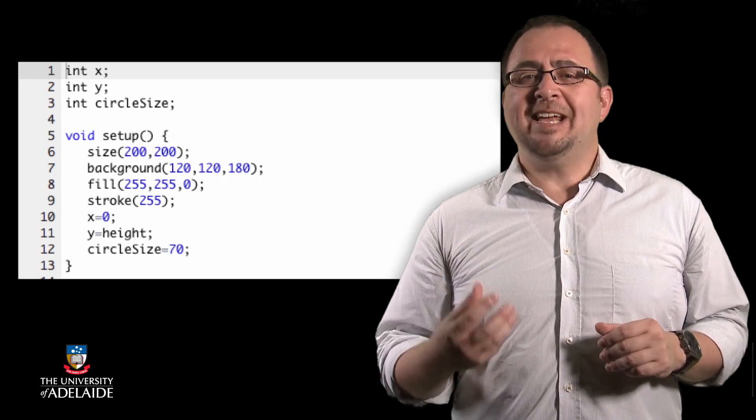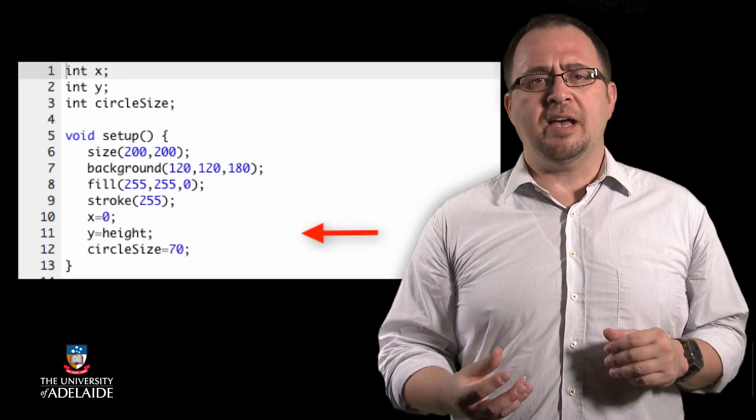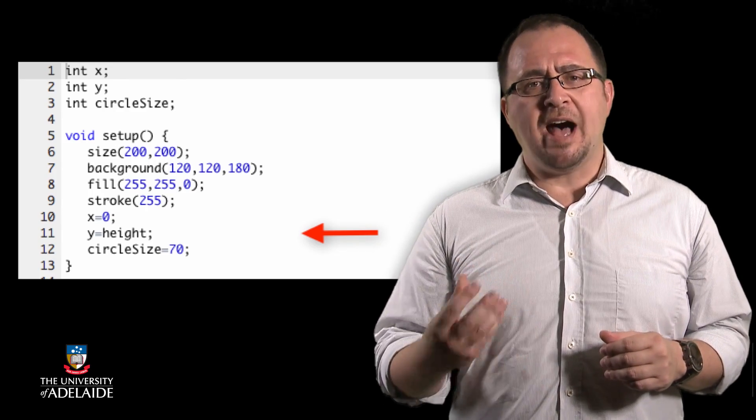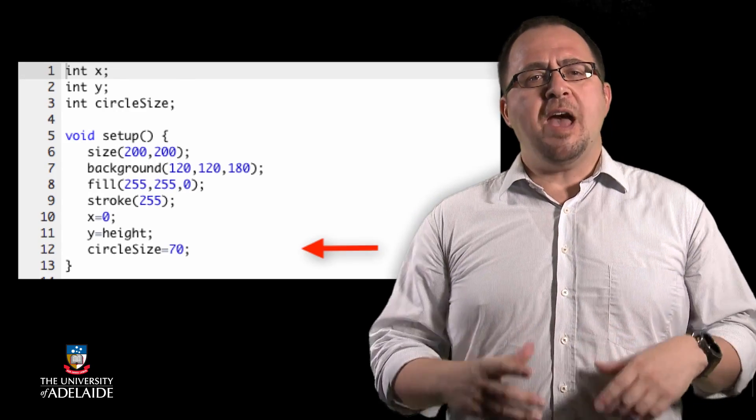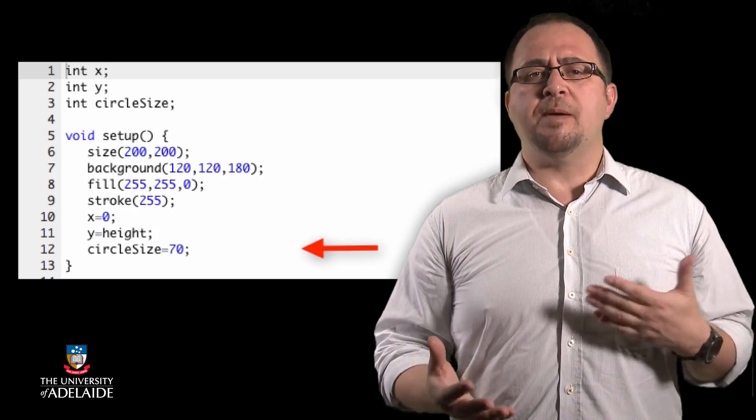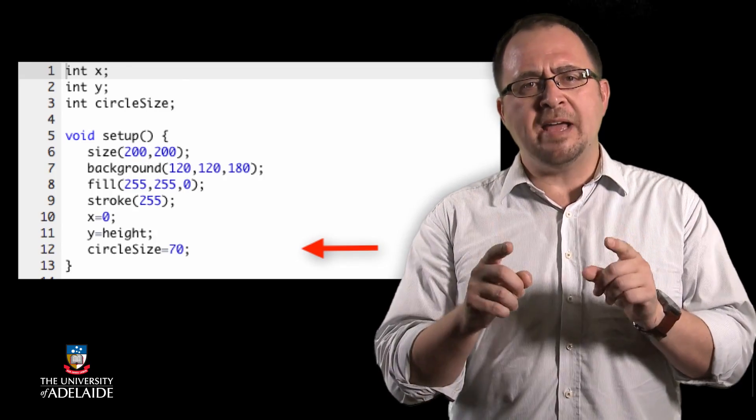A white line to frame the sun, the starting x position, 0 against the left hand side, the starting y position, height, right down the bottom, and we say that we want our circles to start being drawn as 70 pixels wide and high.